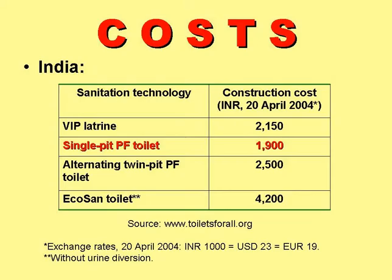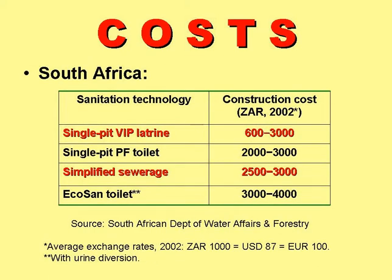Back to costs. These costs are from India and they raise the question: why would a poor rural Indian family choose anything other than a single pit pour flush toilet? These costs from South Africa pose two similar questions: why would a rural family choose anything other than a single pit VIP latrine, and why would a peri-urban community choose anything other than simplified sewerage?